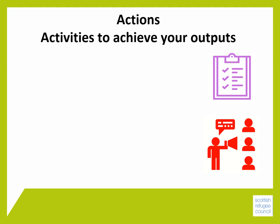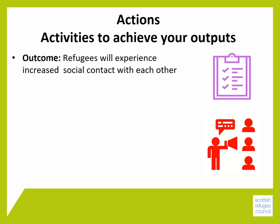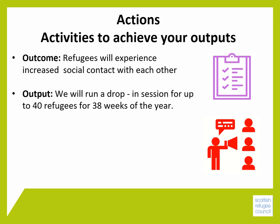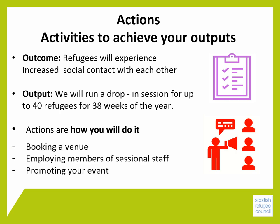To achieve the outcomes and outputs you identify, you will need to think about the actions involved in bringing it to life and making it happen. Let's take the drop-in example. If your outcome is that refugees will experience more social contact with each other, and your output is that your drop-in will run for 38 weeks of the year, there are lots of things you need to do to make that happen. The actions you need to take include booking the venue, applying for funding, employing staff, promoting the event, and evaluating the experience of the people who use it.